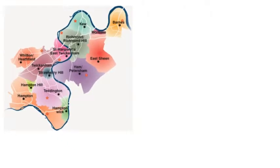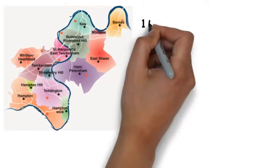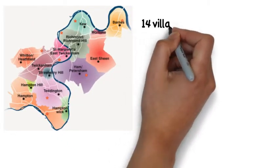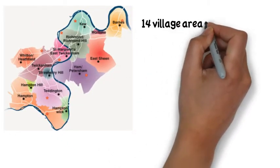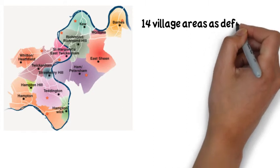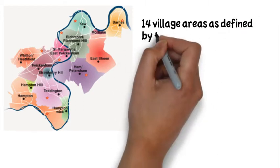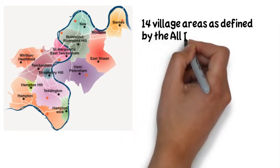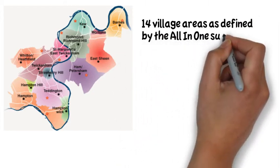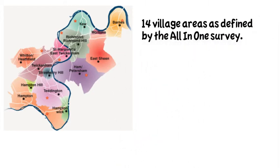This is a map of the borough, showing the different village areas. There are 14 village areas, as defined by the All-in-One survey carried out in 2010.